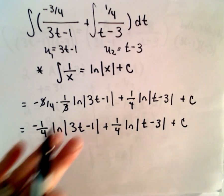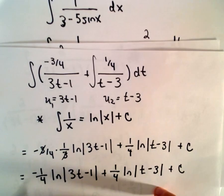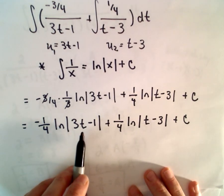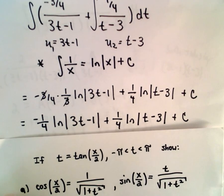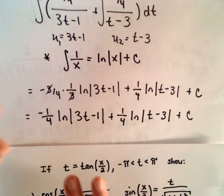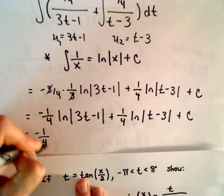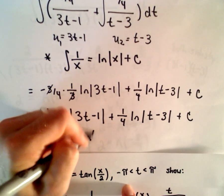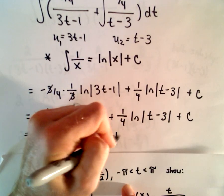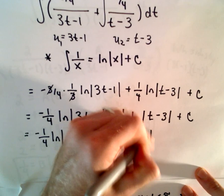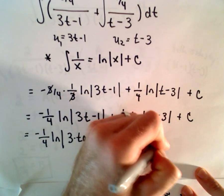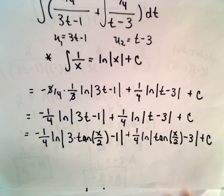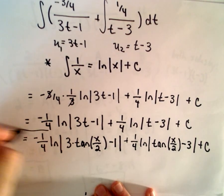Last but not least, our original problem started with the variable x. Just as in any substitution, we need to turn t back into x — we simply replace t with tangent of x over 2. So the solution is: negative 1/4 times ln|3 tan(x/2) minus 1| plus 1/4 times ln|tan(x/2) minus 3| plus C. And that's our solution for part A.